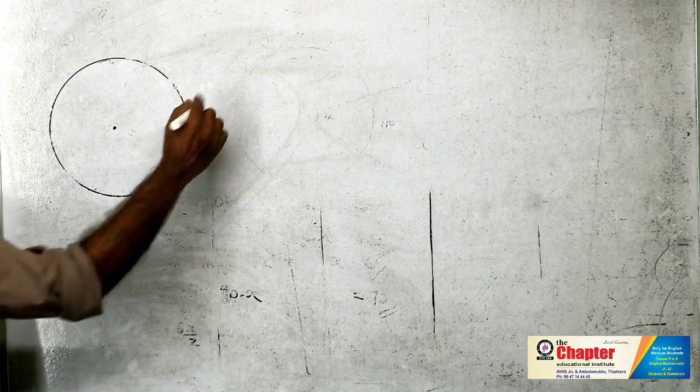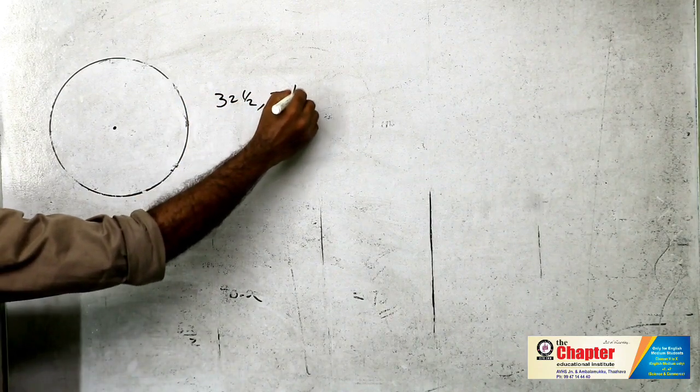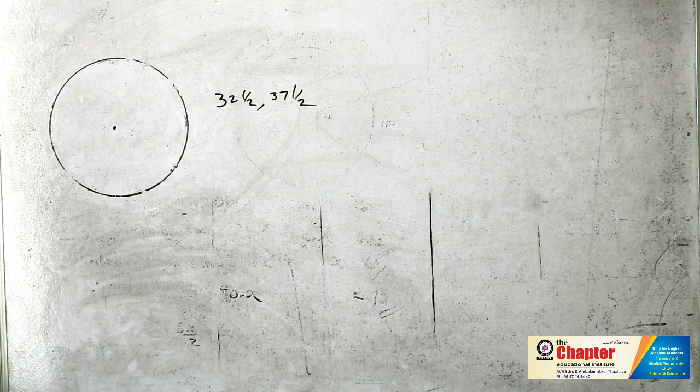Draw a triangle with circumradius 3 cm and two of the angles are 32.5 degrees and 37.5 degrees. We have a circumcircle of radius 3 cm. The two given angles are 32.5 and 37.5 degrees.